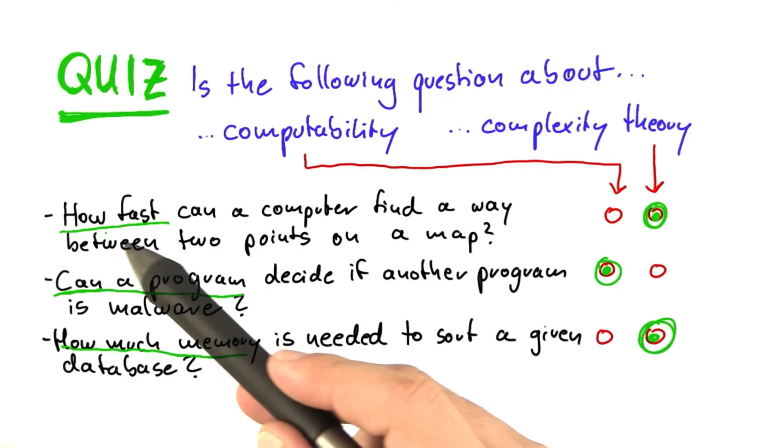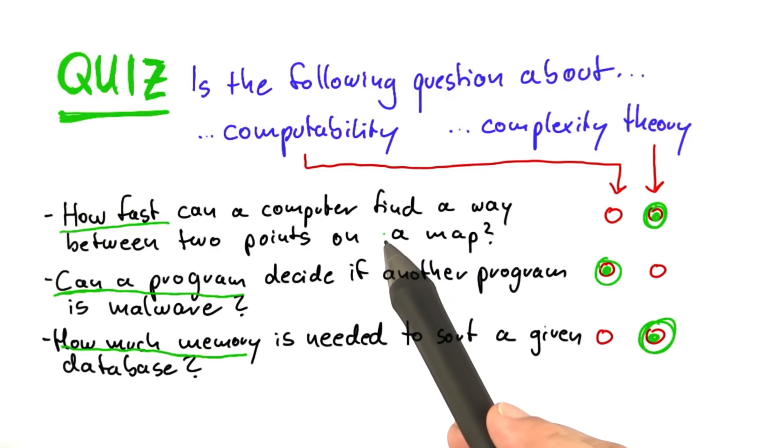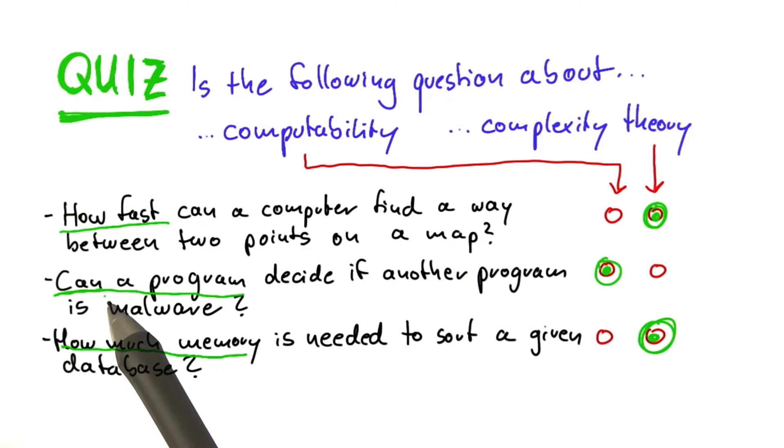We're going to be concerned mostly with time, how fast a computer can solve a given problem, and toward the end of this unit, we're going to pose the ultimate resource question and ask, what are the limits of computation in general?